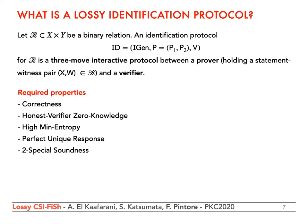The properties usually required of an identification protocol are: correctness, honest verifier zero knowledge, high min-entropy, and perfect unique response — which is not a standard property but is useful in our context. Our protocol enjoys that property, which states that with overwhelming probability over the statement-witness pair output by IGEN, for any commitment and challenge, there exists a unique response such that the commitment, challenge, and response form a valid transcript for the statement output by IGEN. Finally, we have two special soundness, which informally states that a cheating prover can cheat in at most one challenge.